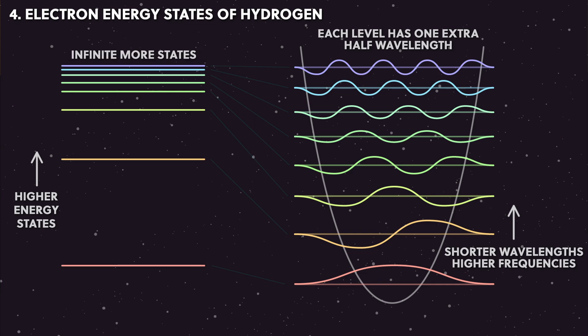As you go up, there's an infinite number of energy levels because you can keep on adding one more half wavelength to the electron wave. But the difference in energies between these levels gets smaller and smaller because the difference between the waves gets smaller and smaller. The biggest difference in energy is between the ground state and the first excited state.